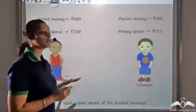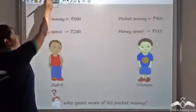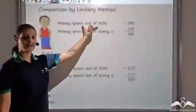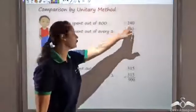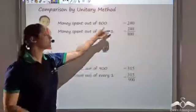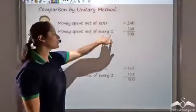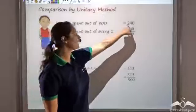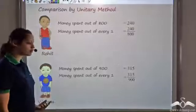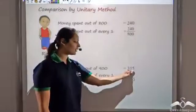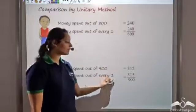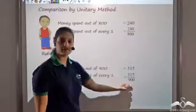When we have to compare the two pocket monies, we can do that by the unitary method. We know out of Rs. 800, Rohit is spending Rs. 240. So we can find out of every one — that is, out of a unit — which is the unitary method. For every one, he would be spending 240 divided by 800. Similarly for Vikram, he was spending 315 for every 900, so for every one he would be spending 315 divided by 900.